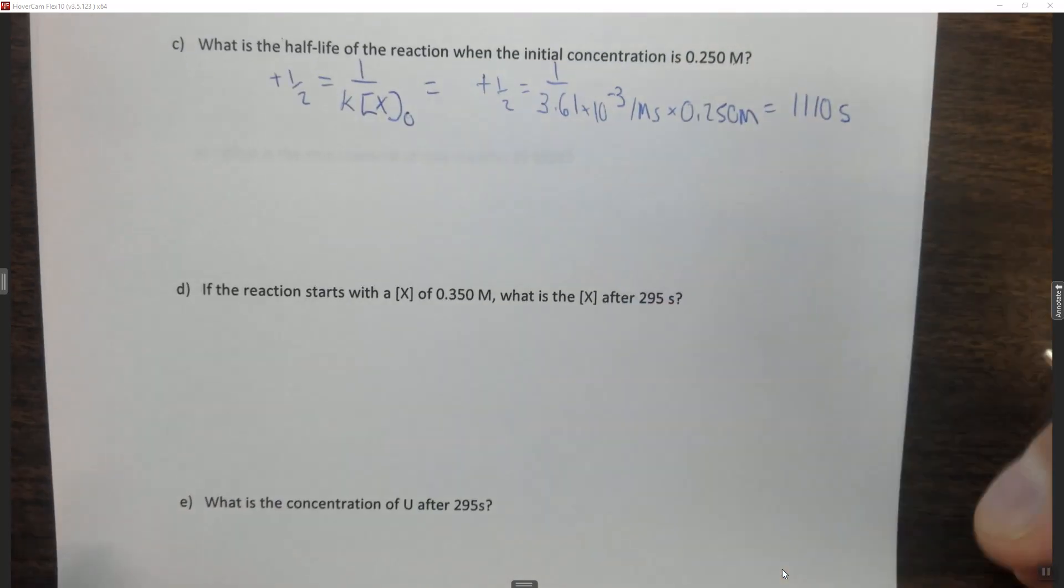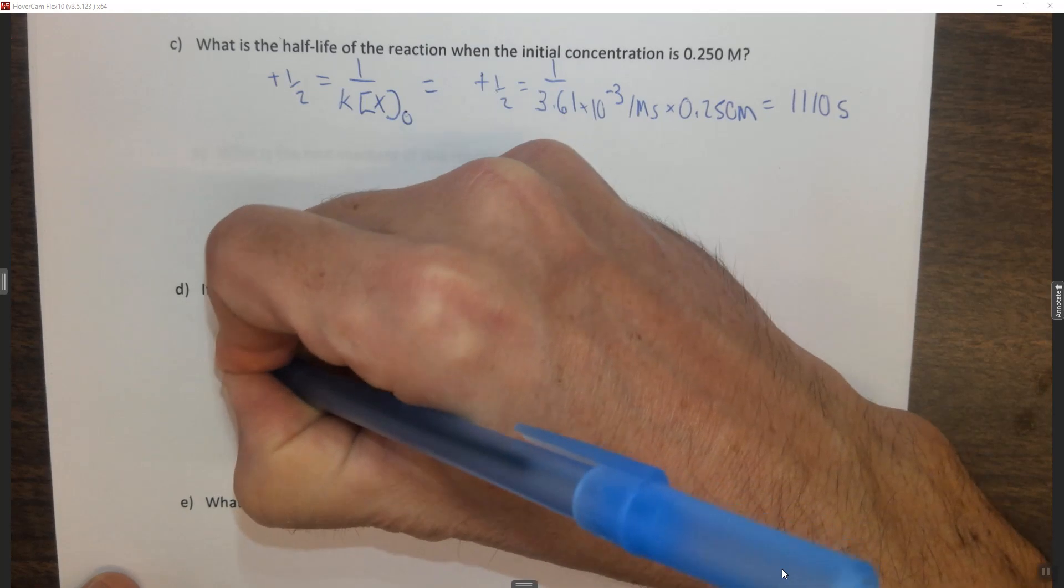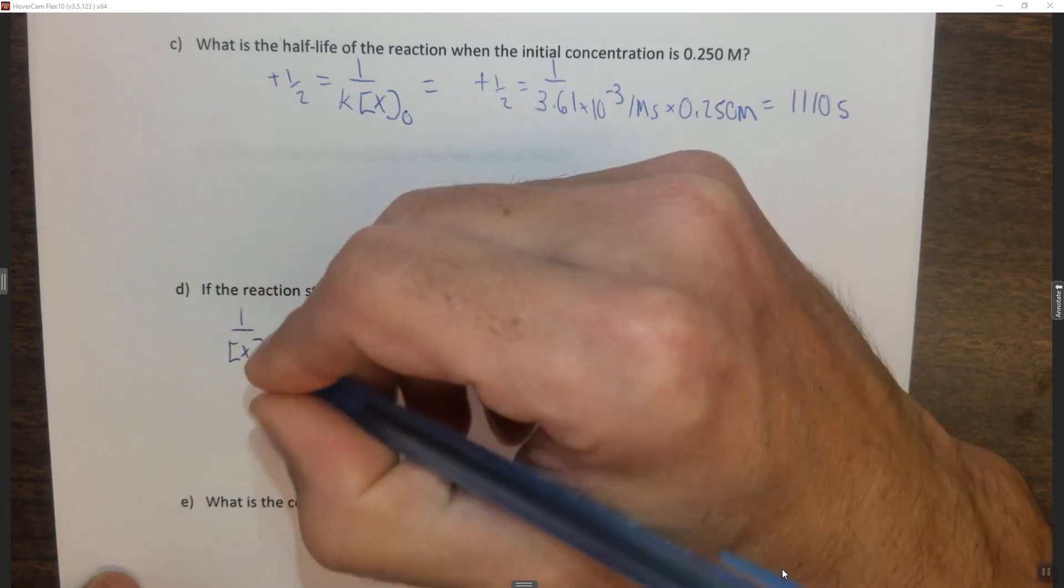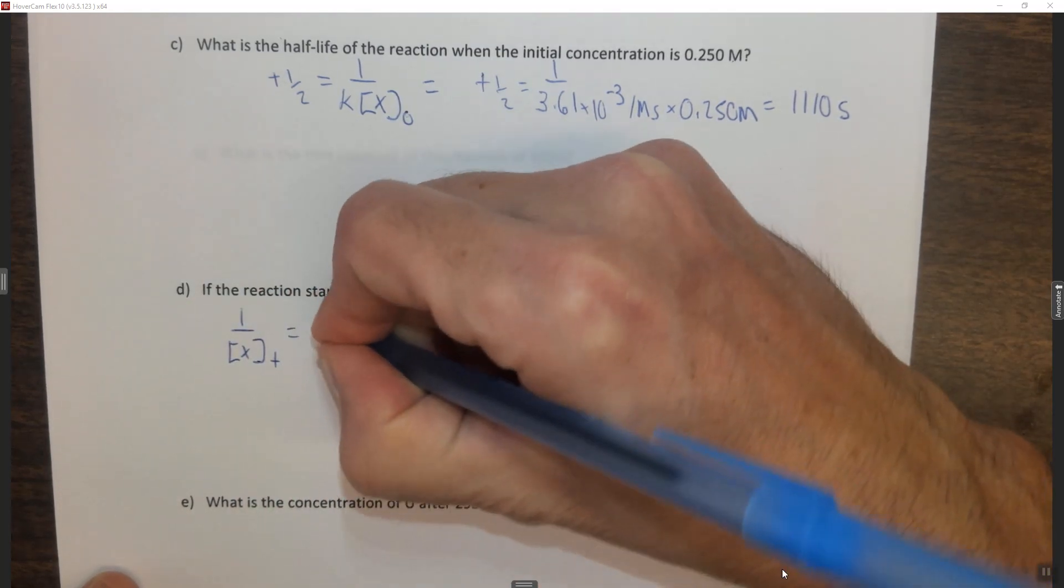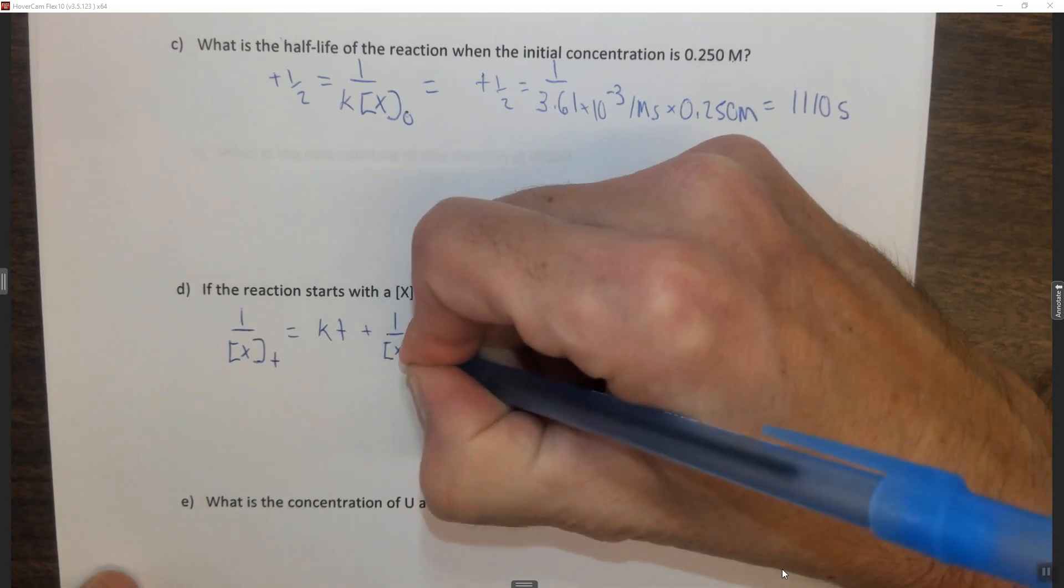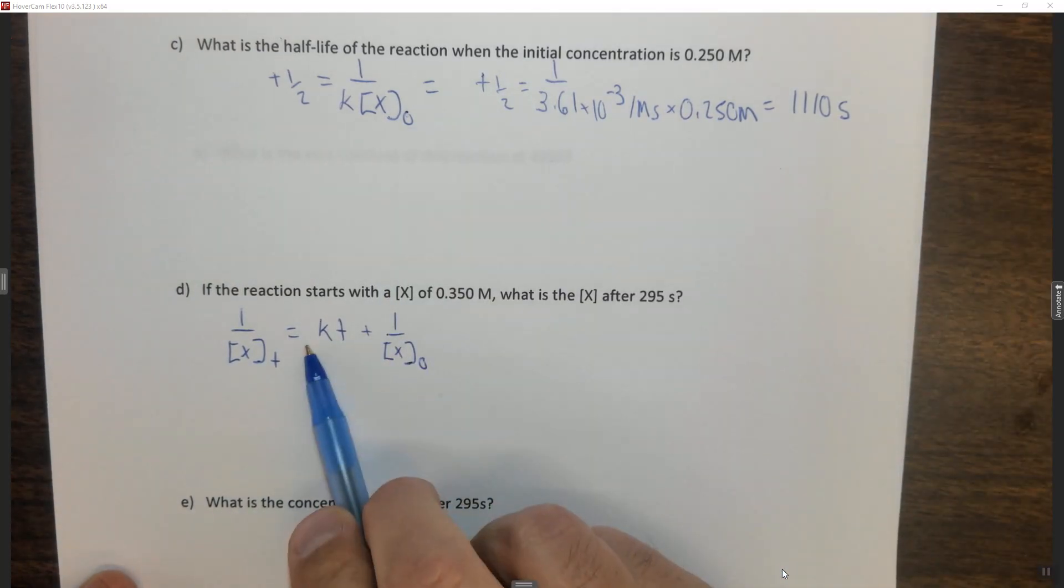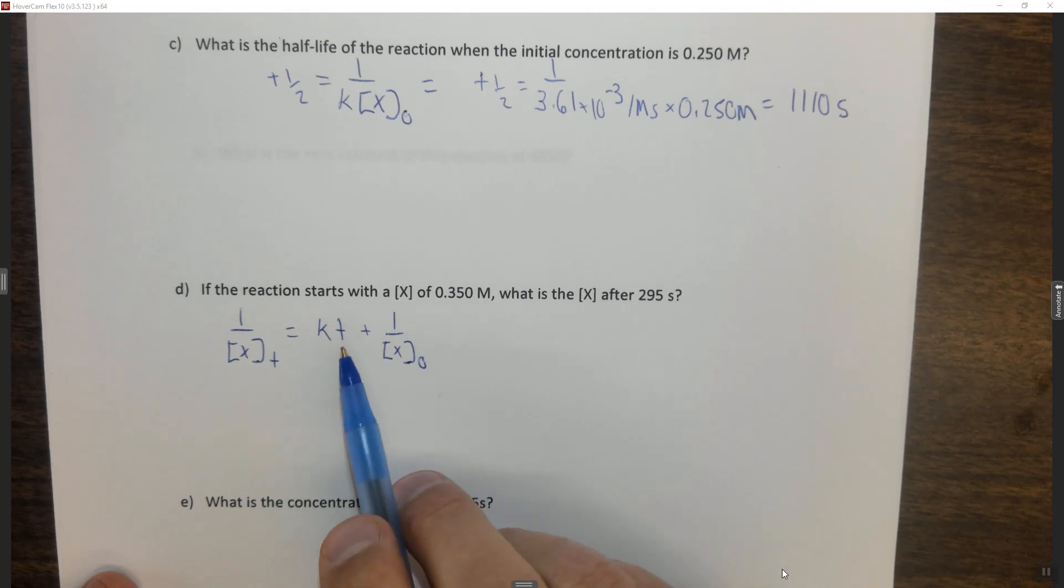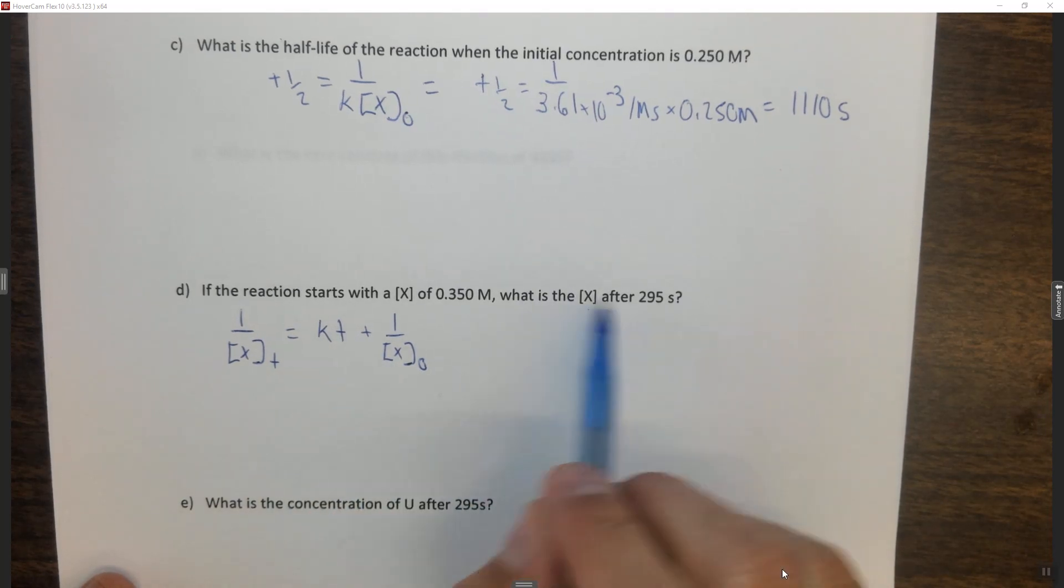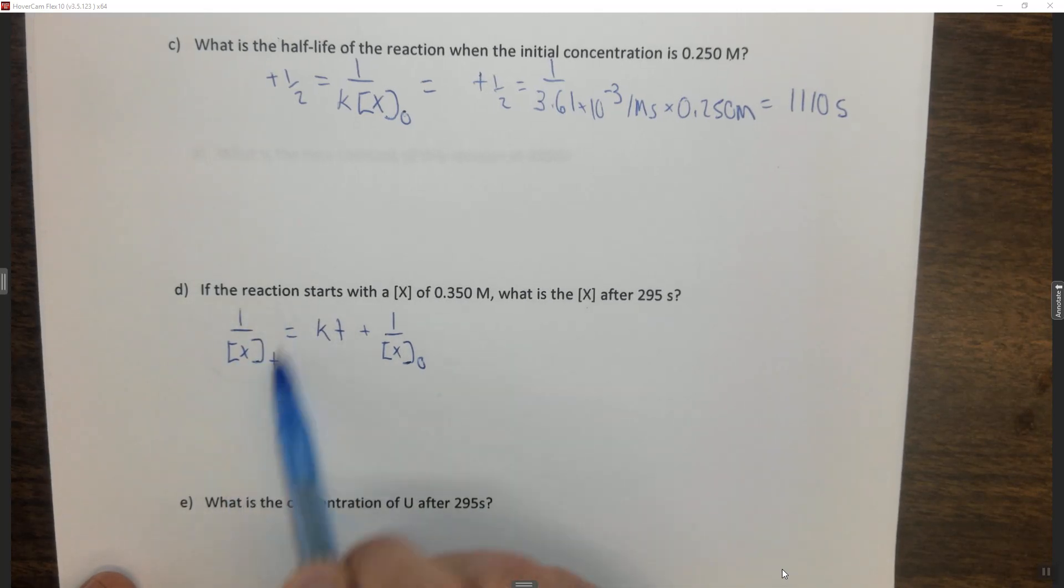So the integrated second-order rate law, I'm just going to write it down here, is 1 over the concentration of X at some t is equal to kt plus 1 over the concentration of X initially. We have k, and what we're looking for is the concentration of X after 295 seconds. Said another way, this is our variable.